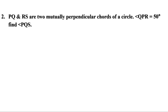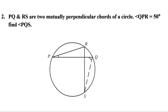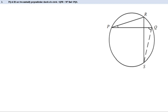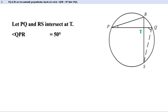Second problem: PQ and RS are two mutually perpendicular chords of a circle. Angle QPR equals 50 degrees. Find angle PQS. Given that PQ and RS are perpendicular, let the intersecting point be T. Now, angle QPR equals 50 degrees, and since PQ and RS are perpendicular, angle PTR equals 90 degrees.